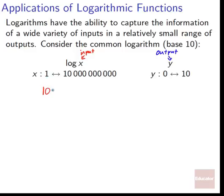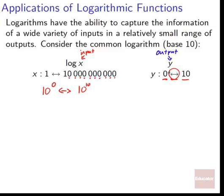Why does this happen? Because 1 is 10 to the 0, and 10 billion is 10 to the 10. Since it's log base 10, when log base 10 operates on 10 to the 0, we get 0. When it operates on 10 to the 10th, we get 10. As it operates on everything in between, we get everything in between as well. So there's massive variance in possible inputs, but a very small range of outputs.